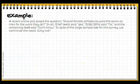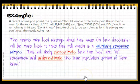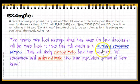A recent online poll posed the question: should female athletes be paid the same as men for the work that they do? 44% said yes, 50% said no, and the remaining 1,448 said they don't know. In spite of the large sample size, we can't trust this result. It's an online poll, meaning people chose themselves to answer — a voluntary response sample. People who feel strongly about the issue in both directions are more likely to take this poll, which will likely overestimate both the yeses and the nos, and underestimate the true proportion of those who don't know.